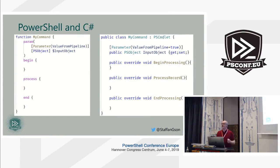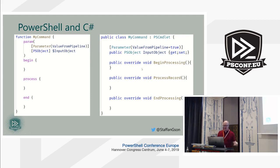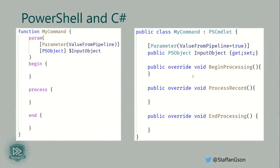Before diving into the C# code implementation of Group-Object, let me show you the similarities between PowerShell advanced functions and C# cmdlets. To the left you have PowerShell and to the right C#, and you can see there's a one-to-one mapping: the begin block is called BeginProcessing in C#, the process block is called ProcessRecord, and the end block in PowerShell is called EndProcessing.